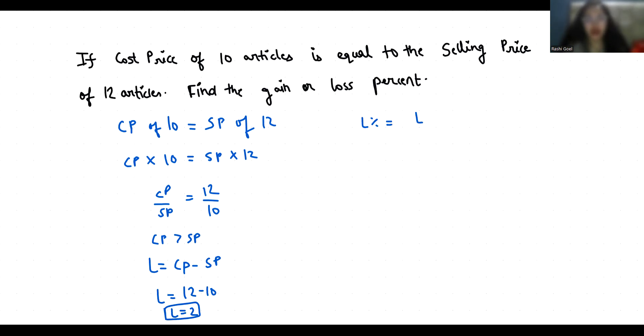So loss is 2 and CP is 12 times 100, that is 1 by 6 times 100.